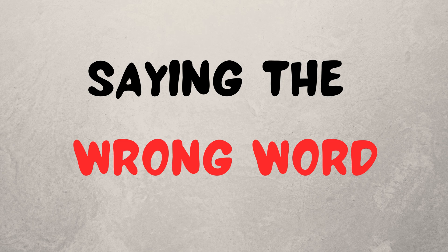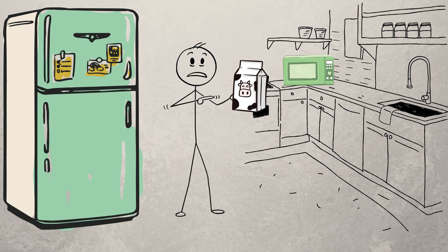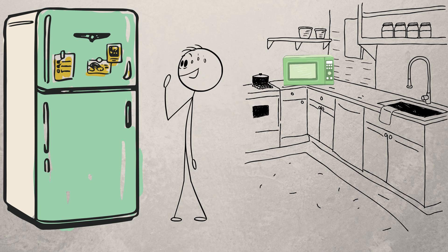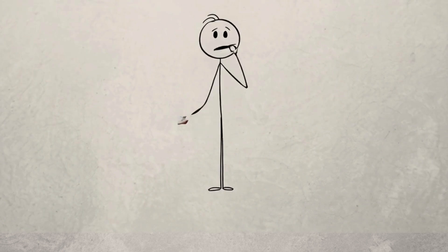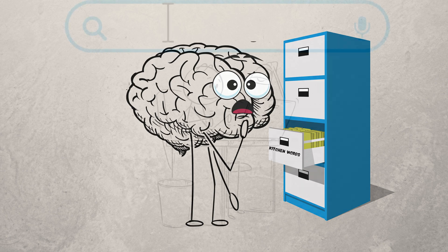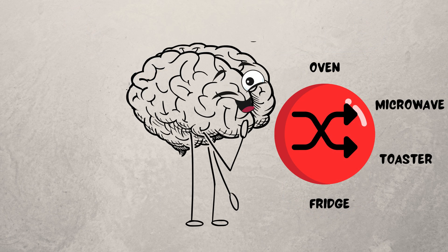Three, saying the wrong word. You, I put the milk in the microwave. Also you. Wait, no. I meant fridge. This is called a semantic slip. Your brain grabs a similar word from the same category. It's like autocomplete but on shuffle mode.